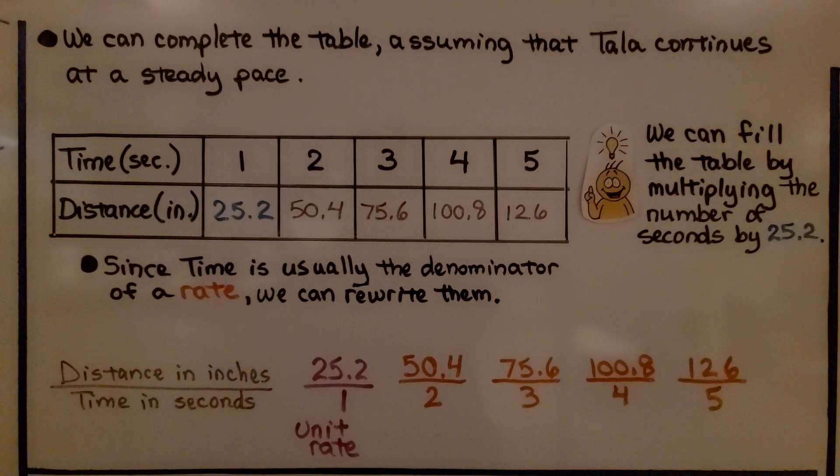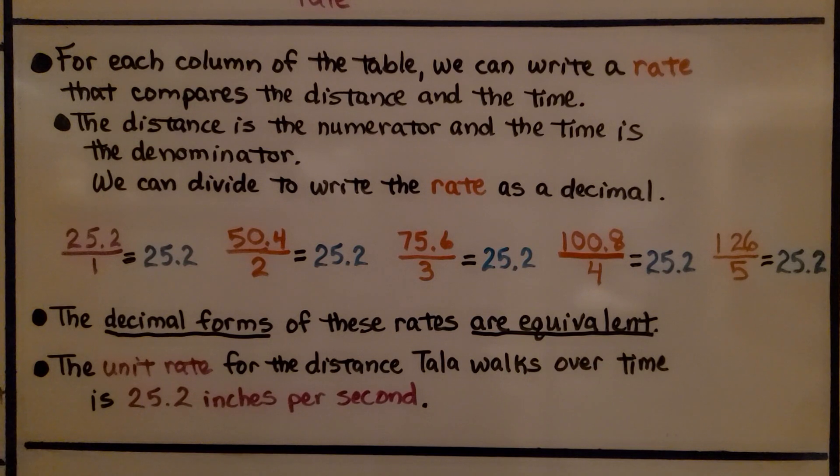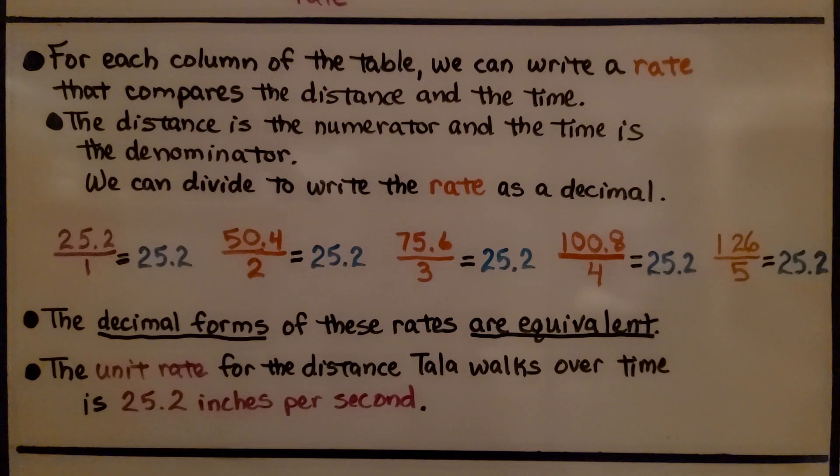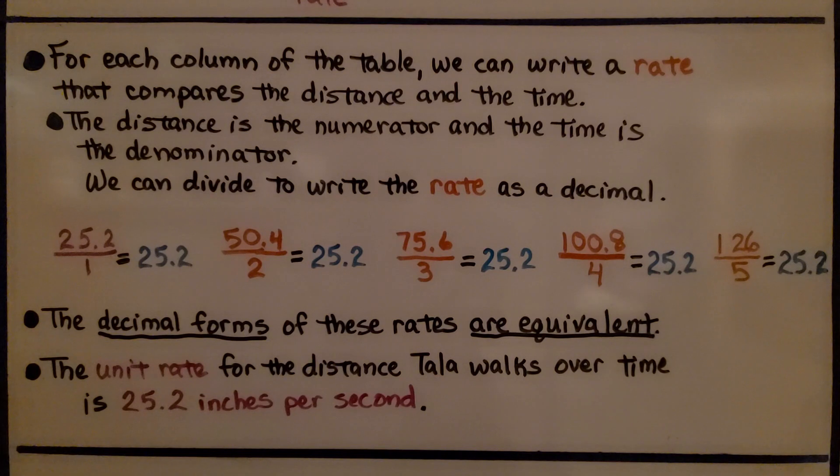We can fill the table by multiplying the number of seconds by 25.2. And since the time is usually the denominator of a rate, we can rewrite them so that the distance in inches is on the top as the numerator and the time in seconds is at the bottom as the denominator. This would be our unit rate. For each column of the table, we can write a rate that compares the distance and the time. We can divide to write the rate as a decimal. The decimal forms of these rates are equivalent. The unit rate for the distance Tala walks over time is 25.2 inches per second.